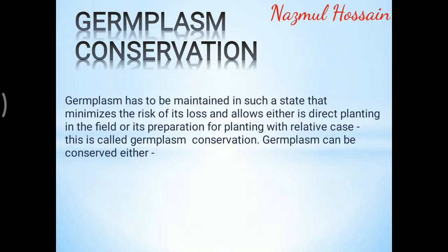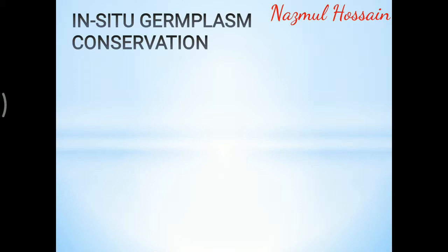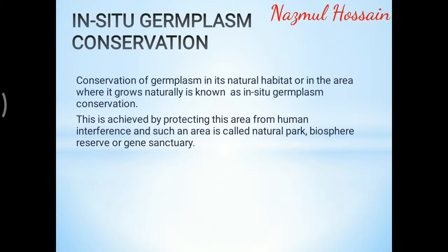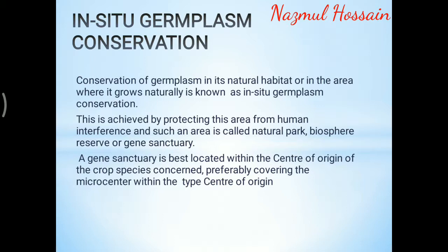Germplasm can be conserved either in-situ or ex-situ. In-situ germplasm conservation: conservation of germplasm in its natural habitat, or in the area where it grows naturally, is known as in-situ germplasm conservation. This is achieved by protecting the area from human interference; such an area is called a national park, natural park, biosphere reserve, or gene sanctuary. A gene sanctuary is best located within the center of origin of the crop species concerned, preferably covering the microcentre within the center of origin.